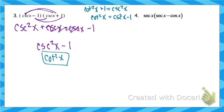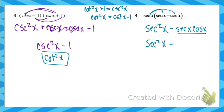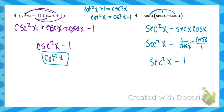The next one is a similar process, but instead of FOILing, we're just going to distribute. Secant times secant is secant squared — think of it like x times (x minus y), which gives x squared minus xy, except instead of x and y it's secant and cosecant. Then we have minus secant times cosine. Secant squared is in one of our Pythagorean identities, so I'll leave that. Secant and cosine are reciprocals, so multiplying them gives 1. Your answer is secant squared minus 1, which equals tangent squared.